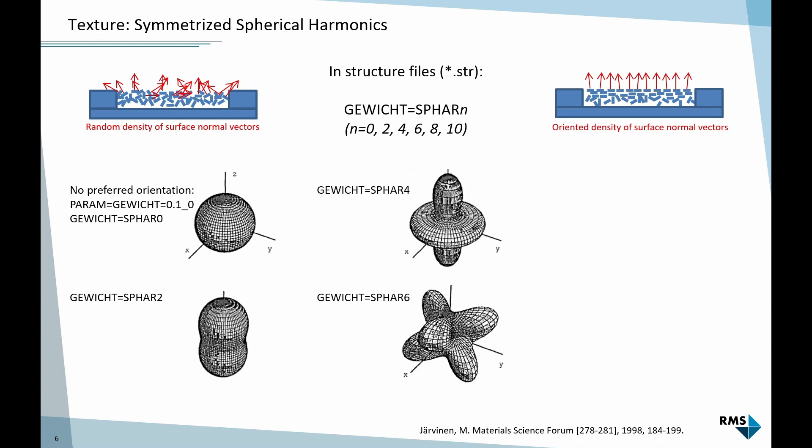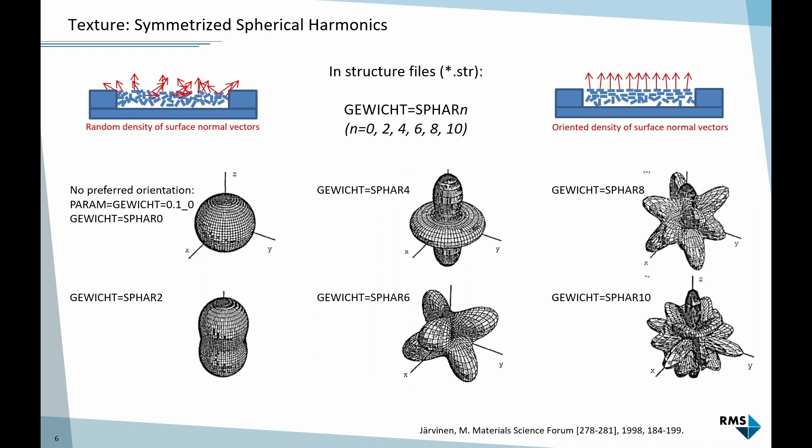If we set it to 4, we already have two directions. They can either point out of the sample holder or in the plane of the sample holder. 6 is getting even more complicated, and then 8 and 10 is very complicated. You can imagine that with SPHAR 10, we can basically model any problem with the intensities of the peaks regardless of where they come from. It would fit substitutions which cause intensity changes by assuming it's texture, because it has so many free parameters.